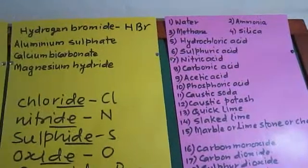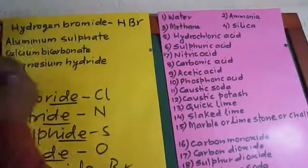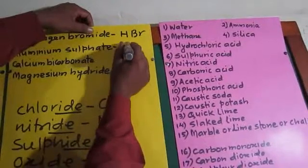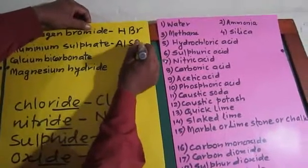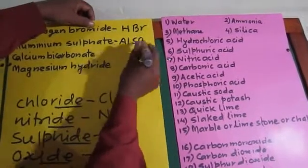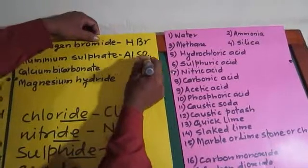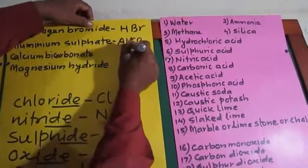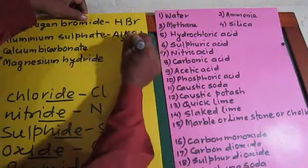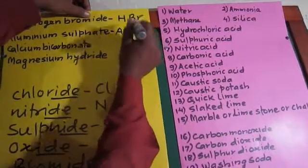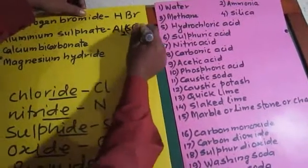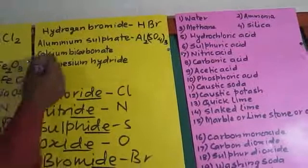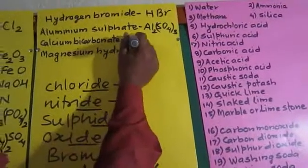Hydrogen bromide: hydrogen symbol H, bromide means bromine is combined. Both have valency 1 — equal valency, no exchange, giving HBr. Aluminium sulfate: Al with SO₄. Aluminium has valency 3 and sulfate has valency 2 — we exchange: sulfate's 2 goes to aluminium and aluminium's 3 goes to sulfate. Since sulfate is a radical, it goes in brackets: Al₂(SO₄)₃.